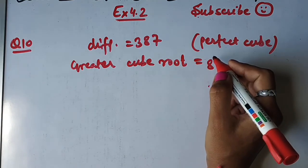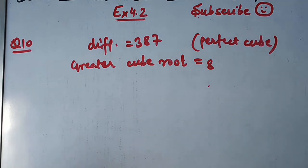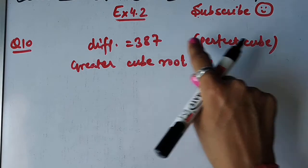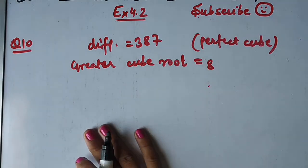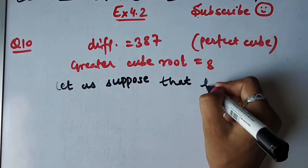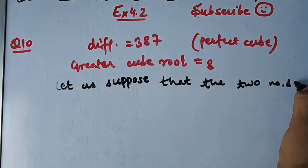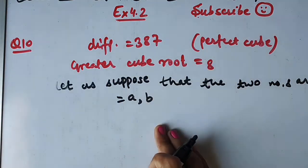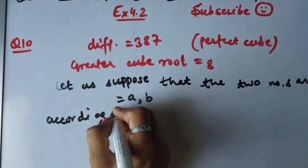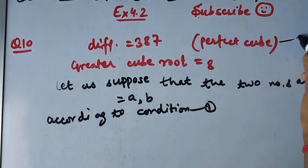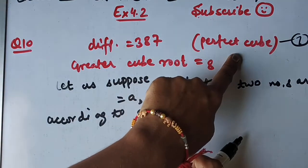Find the cube root of the smaller number — chote wale number ka cube root nikalna hai. Dekho, do numbers diye hain, unke perfect cubes ka difference diya hai. Dono numbers kya hain, pata nahi. Toh suppose karte hain — let us suppose the two numbers are a and b. According to condition 1: inke cubes ka difference 387 hai.